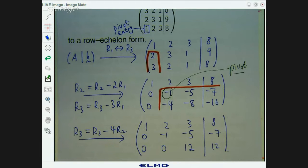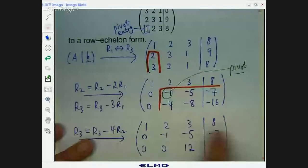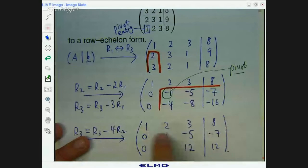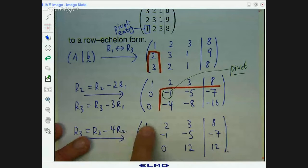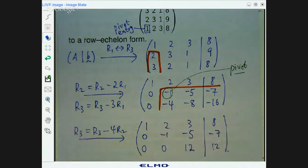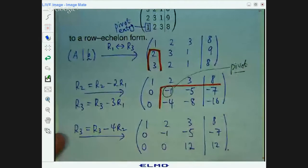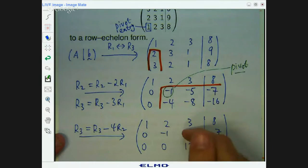So how do we know when to stop? Let's look at what we've got now and see if we have a row echelon form. There are no zero rows, so we don't have to worry about putting them at the bottom. Every row is non-zero. This is the first non-zero entry of row 1, this of row 2, and this of row 3. Moving from top to bottom, the leading entries move to the right — so that is a row echelon form. Why is this form nice? We can solve for z: 12z = 12, so z = 1. Then from the second row, −y − 5z = −7, and we back-substitute z to get y, then back-substitute to get x.